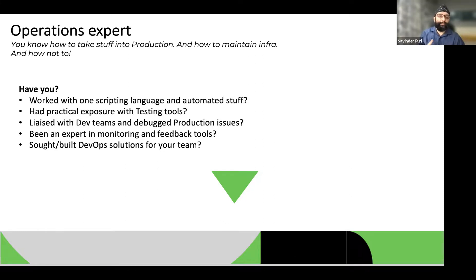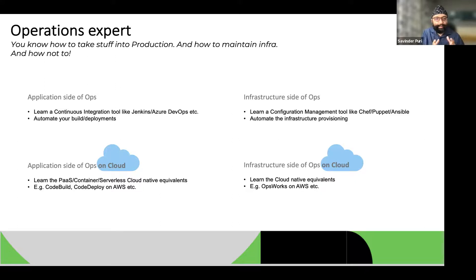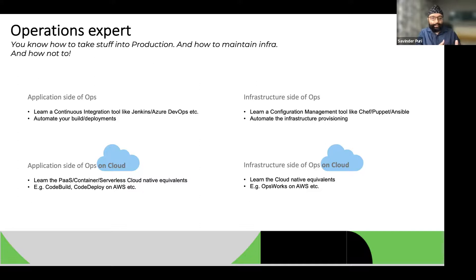Continuing with the operations expert: on the application side, pick up a continuous integration tool — Jenkins, Azure DevOps, or similar — and try to automate your builds and deployments. On the infrastructure side, learn a configuration management tool such as Chef, Puppet, Ansible, or Terraform, and learn about infrastructure provisioning. If your organization is on the cloud, learn the cloud equivalents — serverless, PaaS, container solutions, and the AWS equivalents for infrastructure provisioning.